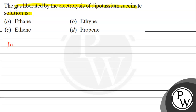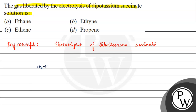The key concept for this question is the electrolysis of dipotassium succinate. What is the key concept? The electrolysis of dipotassium succinate — what will happen?